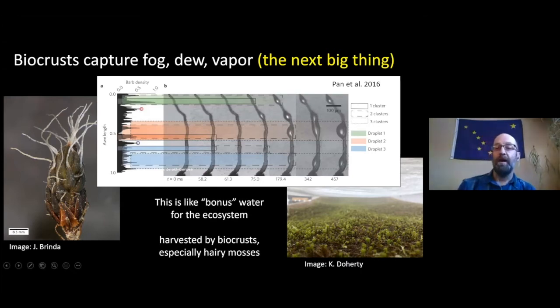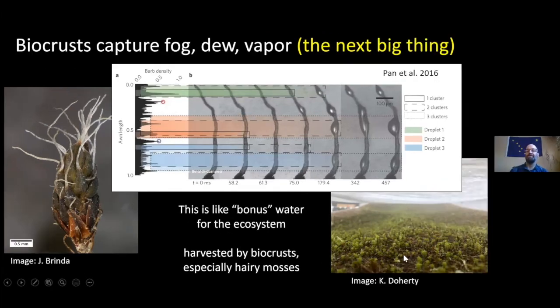These mosses — in this case Centrichia ruralis — are so good at growing just on fog that we're actually growing them artificially using just fog. You can grow them in about eight weeks like that.